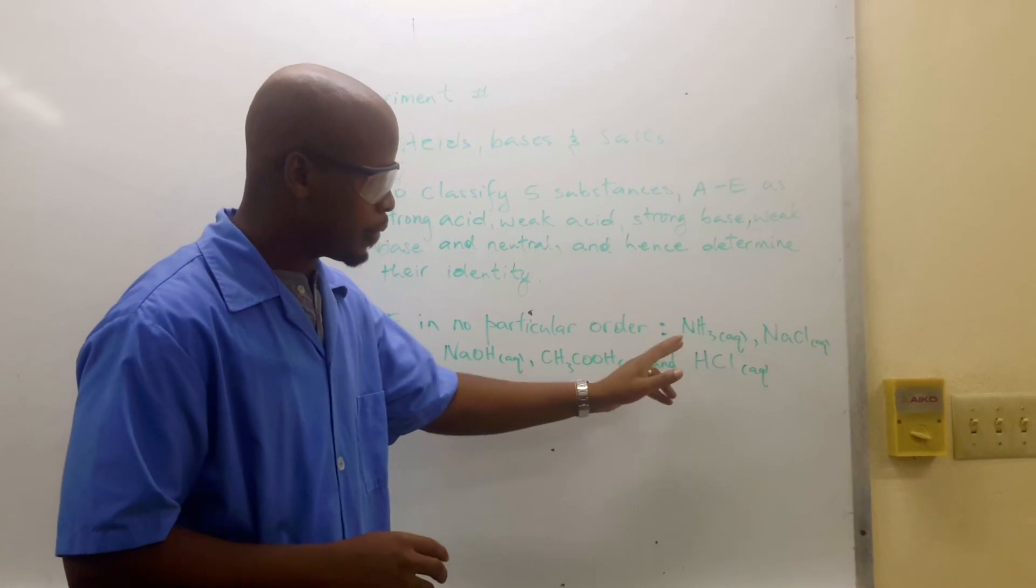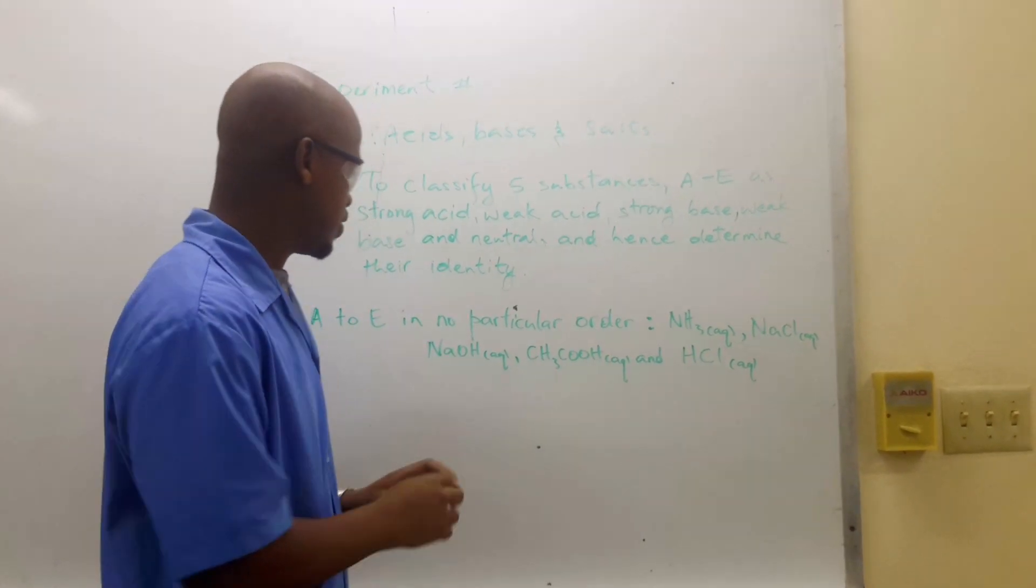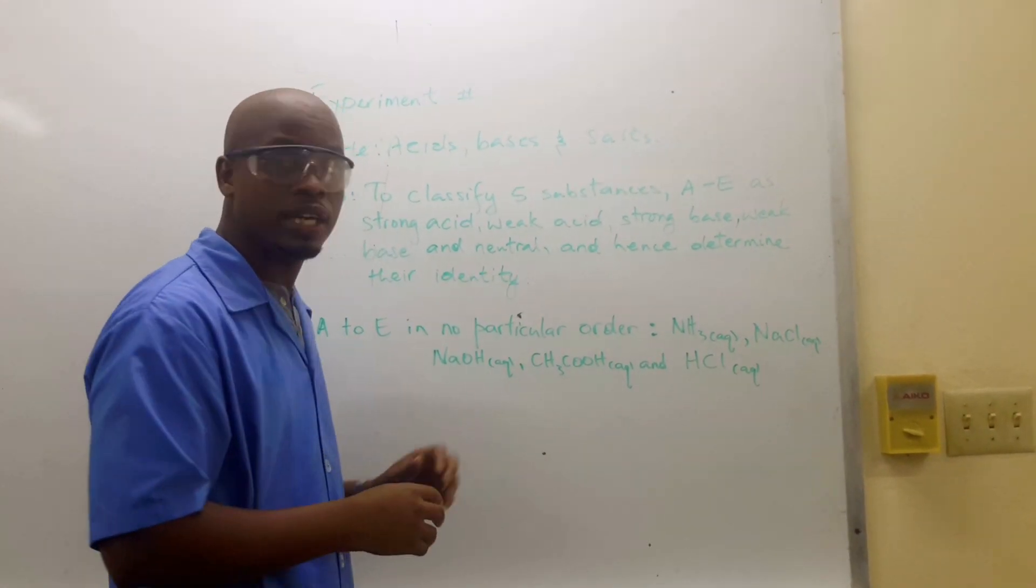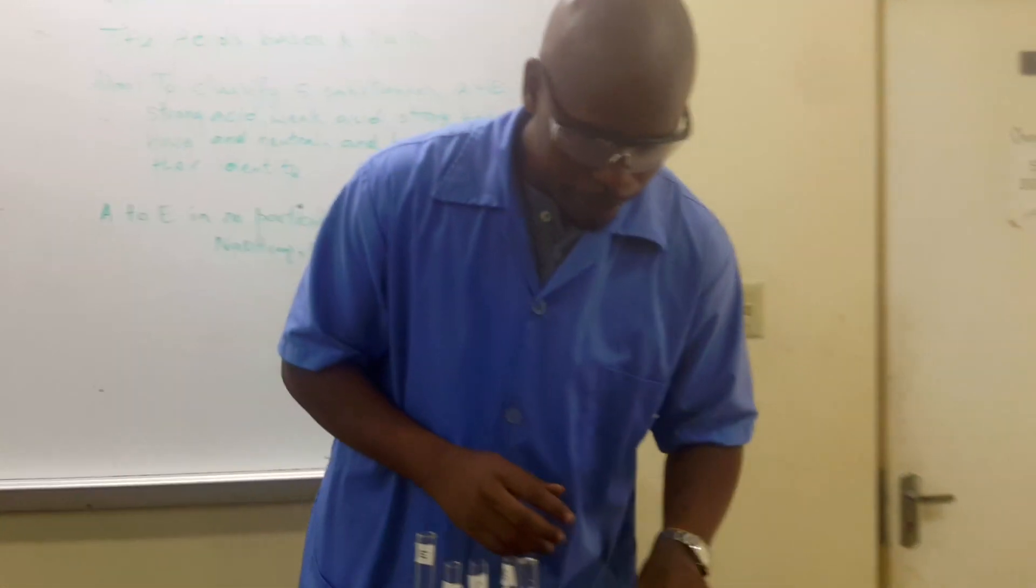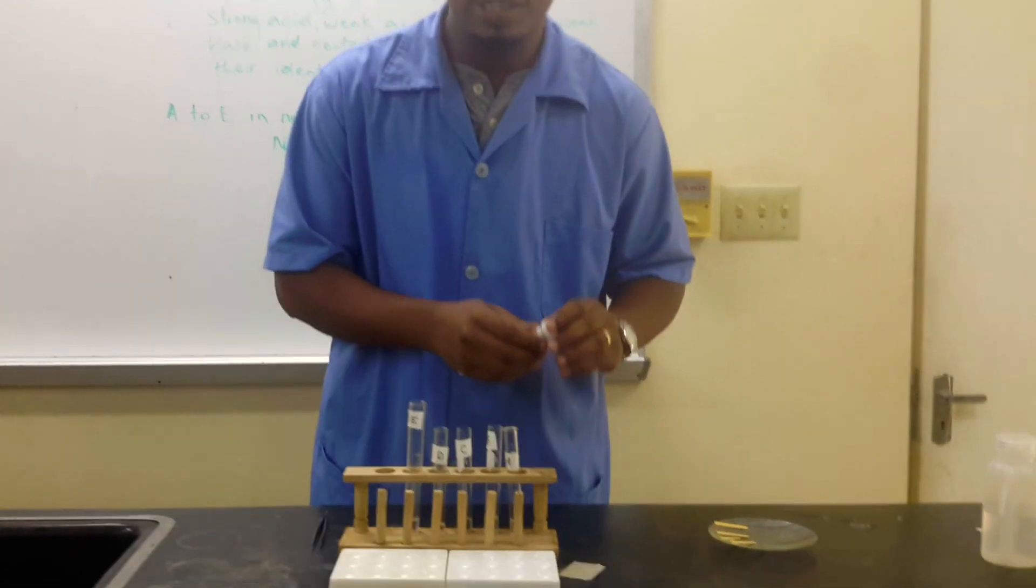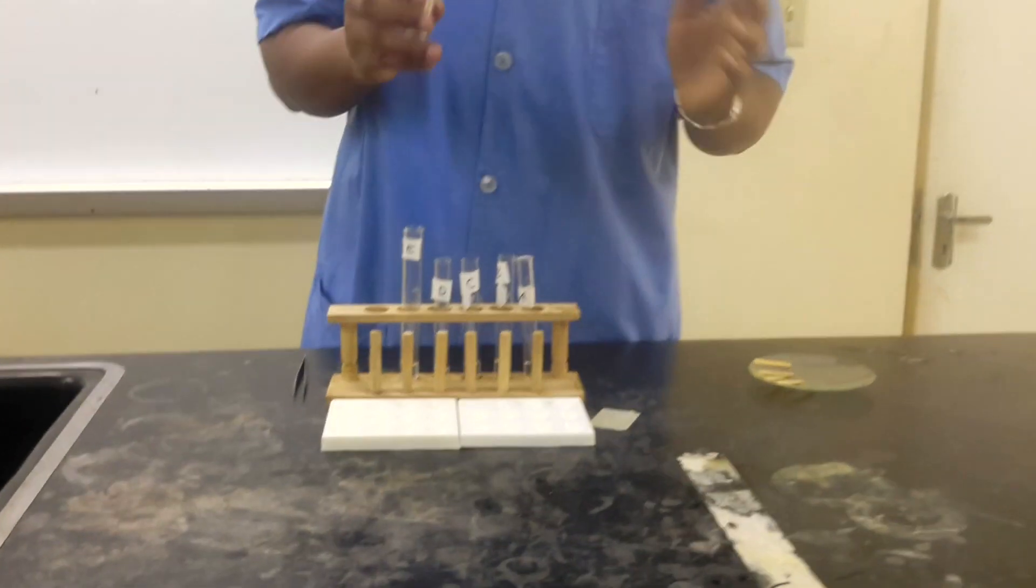In no particular order, these substances are aqueous ammonium, sodium chloride solution, sodium hydroxide solution, ethanoic acid, and hydrochloric acid. We're going to determine their pH and use that to determine whether they're strong acids, etc.